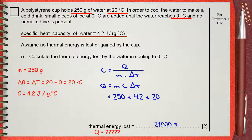The mark scheme gives two marks: one mark for the use of the equation or the substitution with numbers, and the second mark is for the final answer, 21,000 joules.